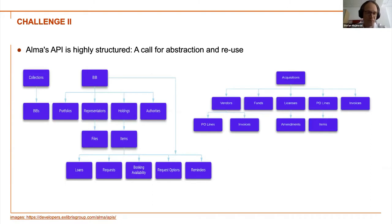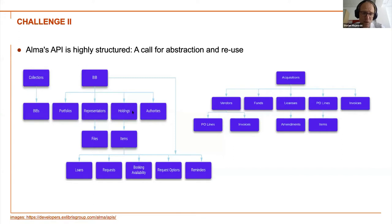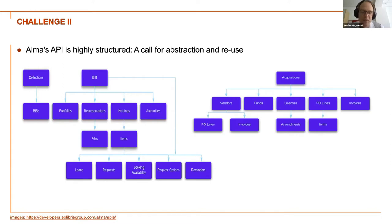Challenge number two: the API is highly structured, and a highly structured API calls for abstraction and reuse. We have 'bib' representing the bibliographic entity, and 'bibs' (the plural) — the container where all the bibs are. Same with holdings, items, loans, requests — it's basically all the same structure. Many of these objects share common features; most can be instantiated in a certain way, and we have interrelations. We don't want to re-implement for items or vendors what we implemented for bibs — we want to reuse it.